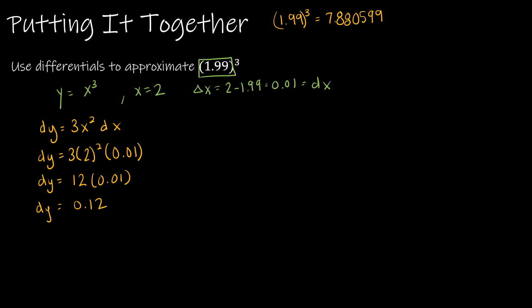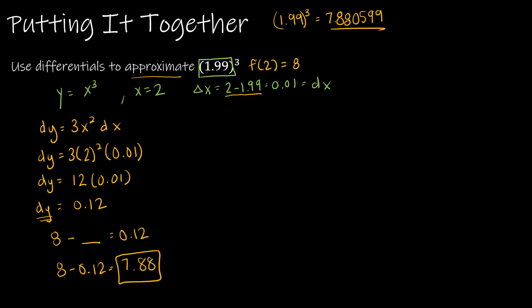That's not yet the approximation of 1.99 cubed — that's the difference from f(2). What is f(2)? 2 to the third is 8. Just as we took 2 minus 1.99 to get delta x, if I take 8 minus the real answer I should get 0.12, which means I can take 8 minus 0.12 to get 7.88. That is my approximation — and notice, it's a pretty good approximation.